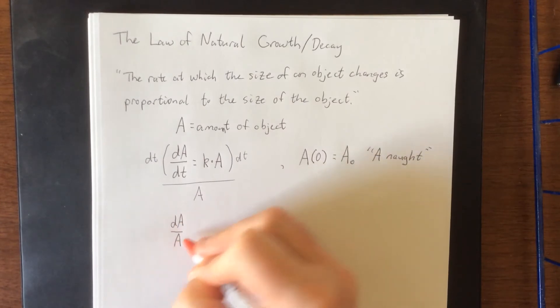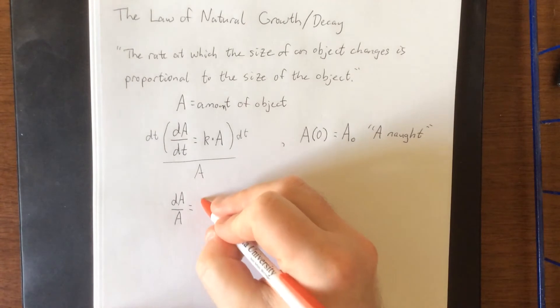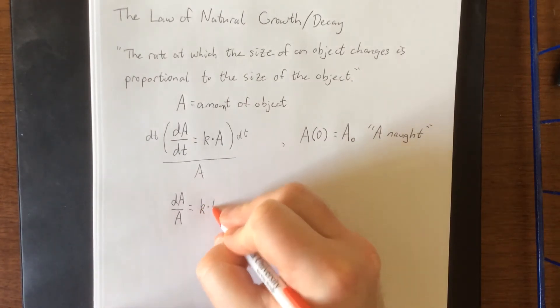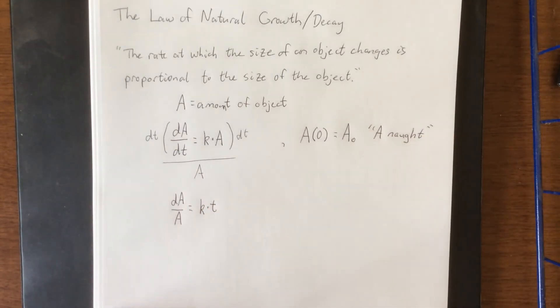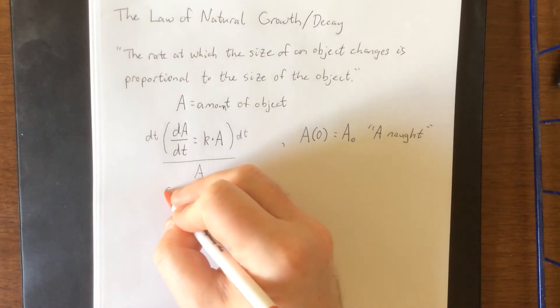On the left-hand side that will give us dA over A, and that will be equal to k times dt. In this form we are ready to integrate.